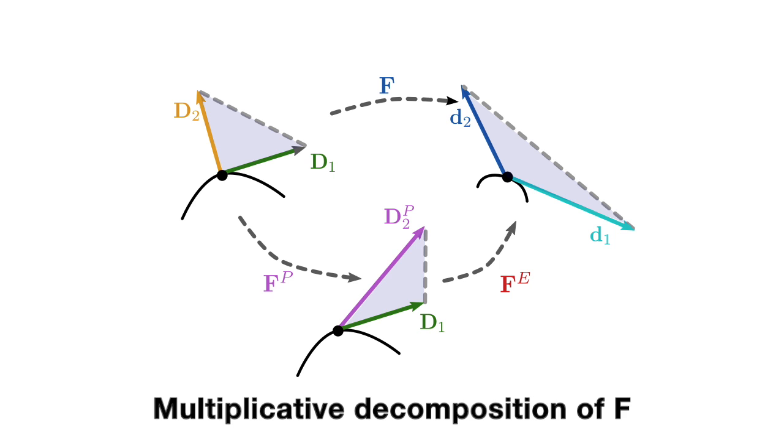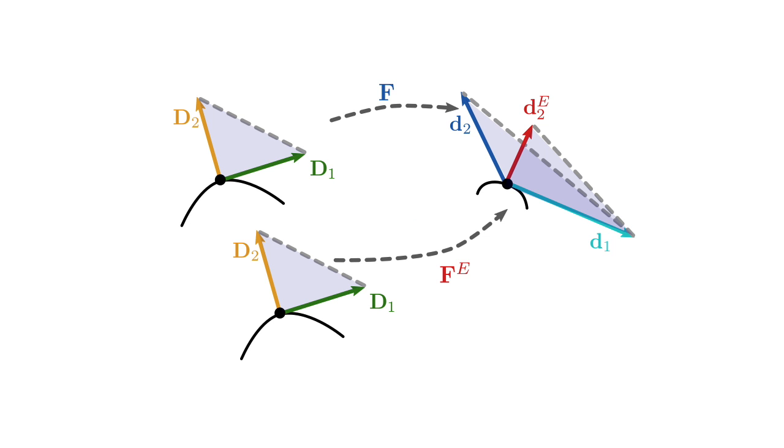To do this, we decompose f into fp, the forgotten sliding and separation, and fe, the remembered collision and shearing. Using fe, we can define d2e, the remembered d2. d1 is preserved as we don't want to forget anything that happens in the manifold.